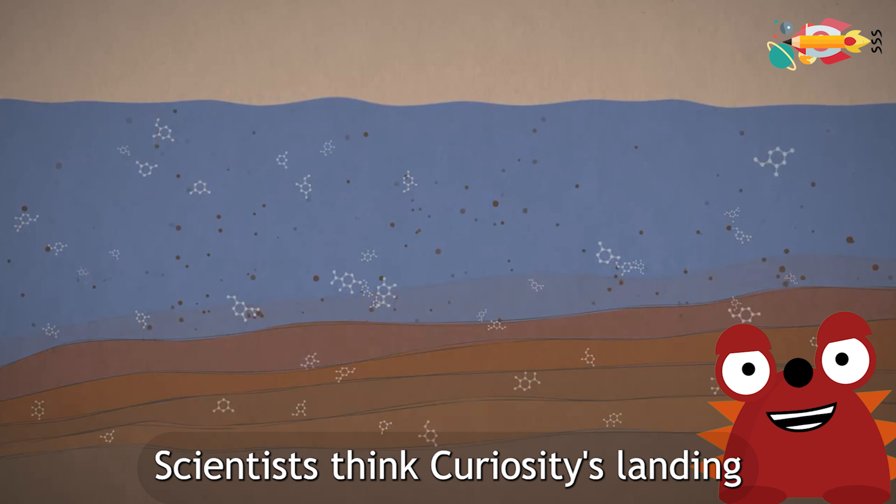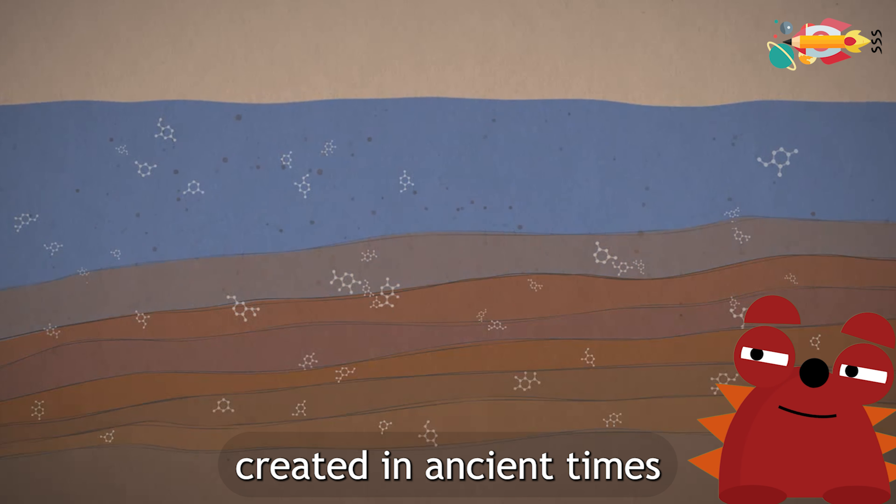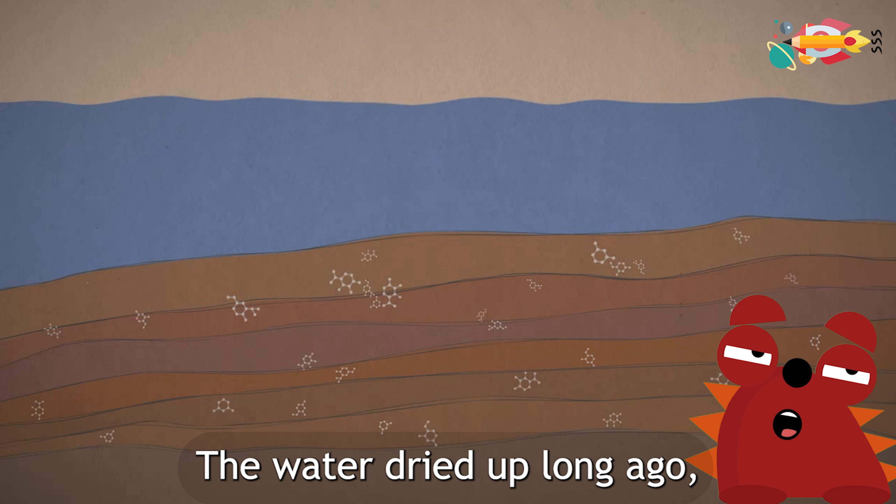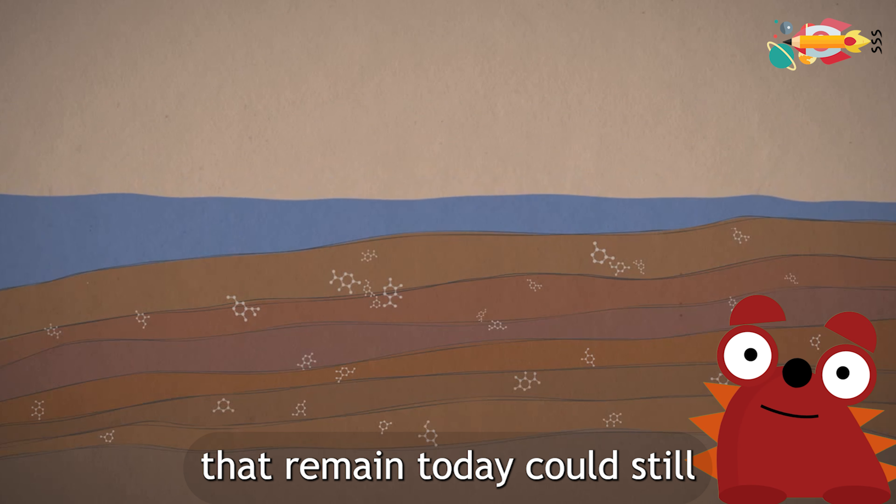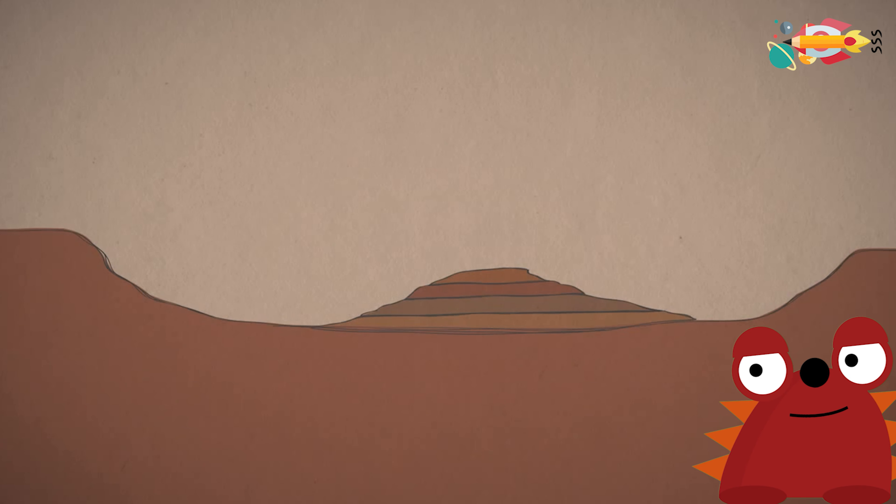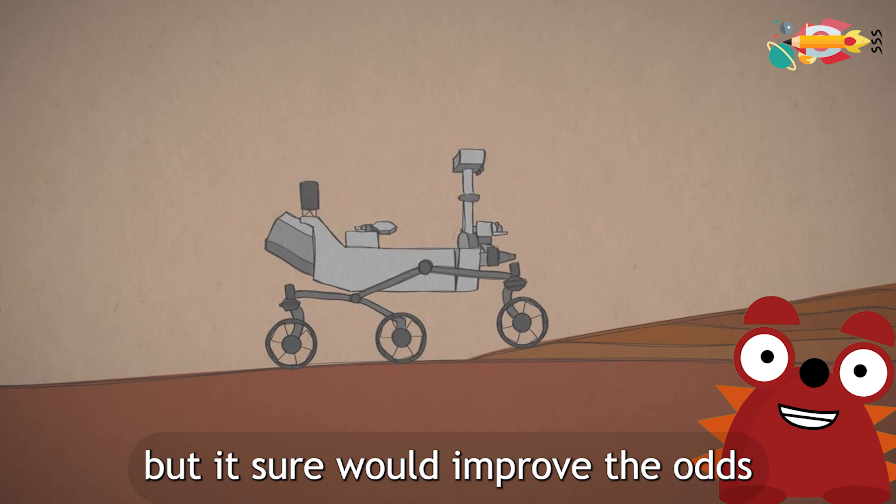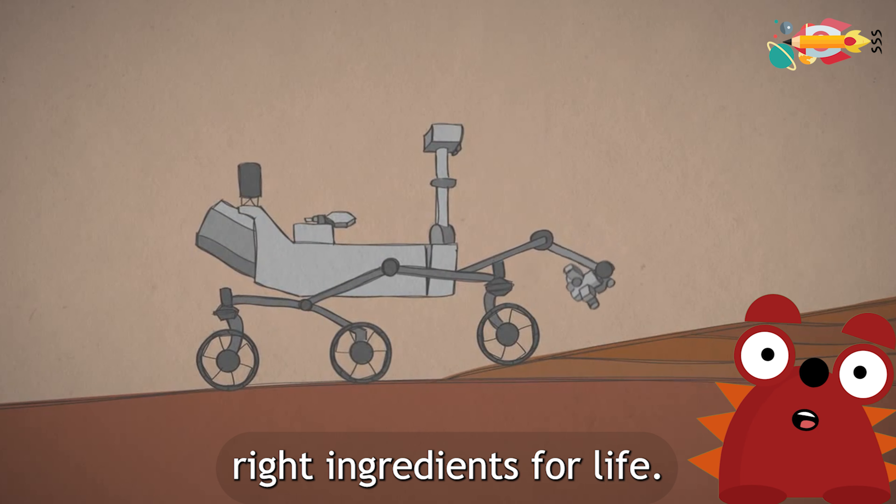Scientists think Curiosity's landing site, Gale Crater, contains those special layers, created in ancient times when water was present. The water dried up long ago, but rock layers that remain today could still preserve organics inside. If Curiosity finds organics, it wouldn't prove life existed, but it sure would improve the odds that Mars once had the right ingredients for life.